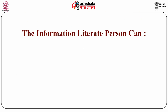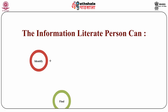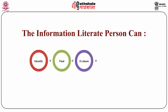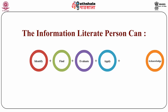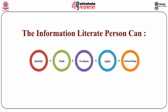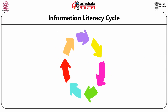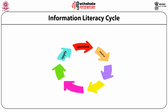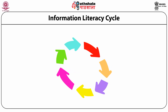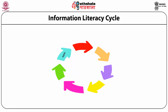The person is able to identify — that is the first component — then able to find, the second component, then able to evaluate, the third component, then able to apply and acknowledge the information. Here is the diagrammatic representation of the information literacy cycle, showing all the components of information literacy.